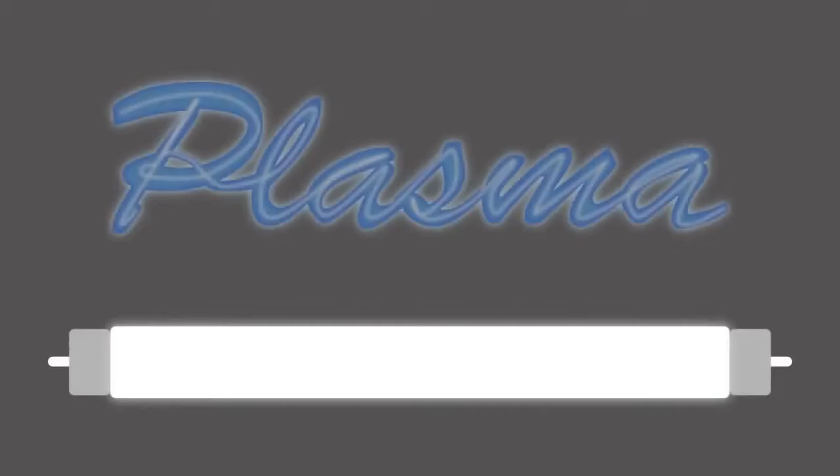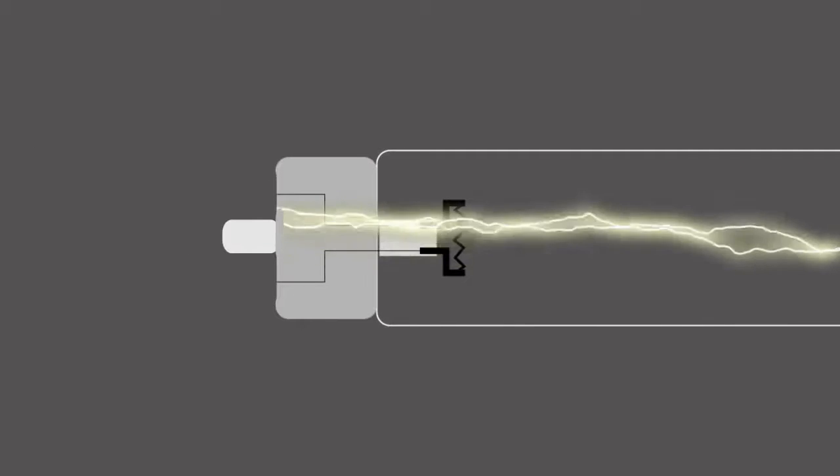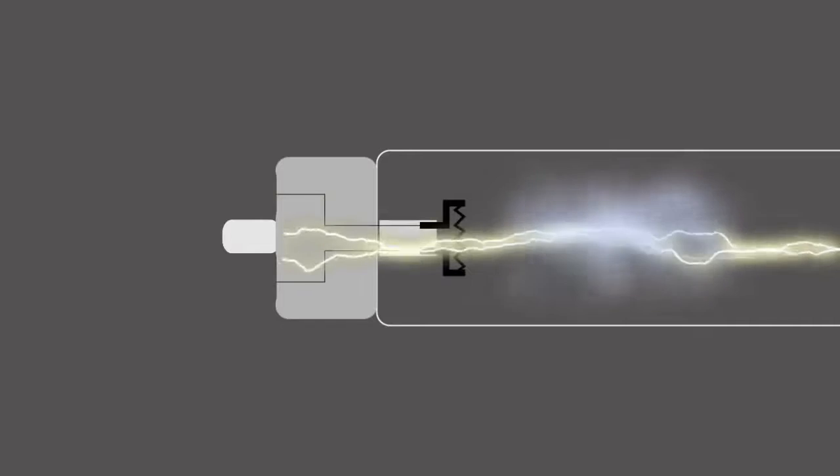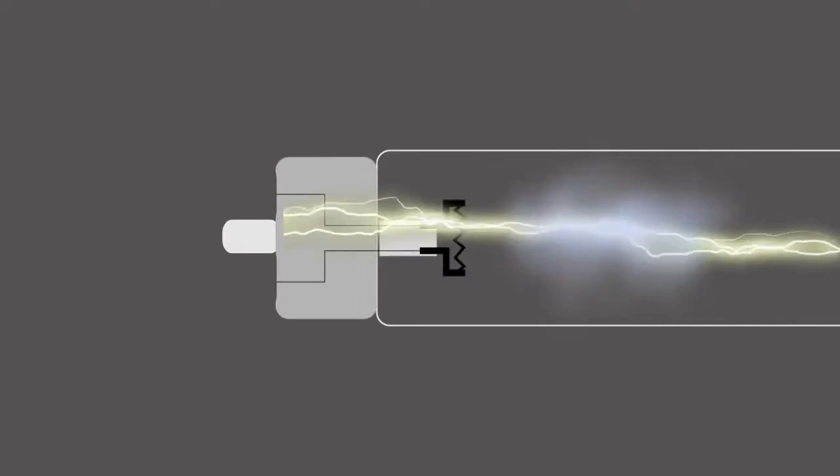Plasma can be found in fluorescent light bulbs and neon signs. When an electrical current is passed through the mercury vapor in fluorescent light bulbs, it heats up the gases sufficiently to strip the electrons and to create plasma.